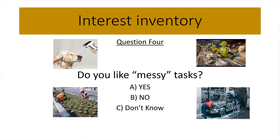Answer A for yes, B for no, C for don't know. You see some examples of messy tasks in the slide. Lots of things out there that could be really good jobs, but you'd have to be able to tolerate getting a little messy. Pause the video and think about your answer.